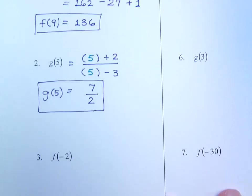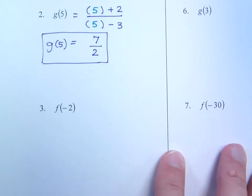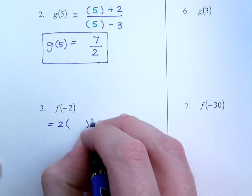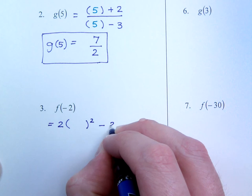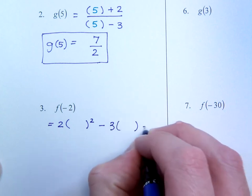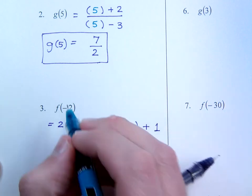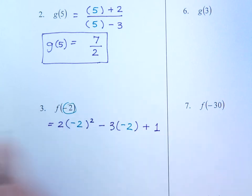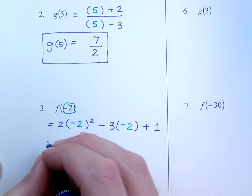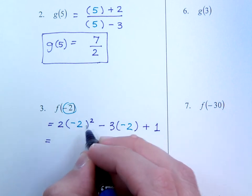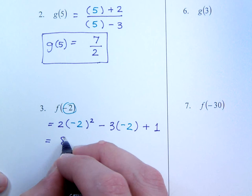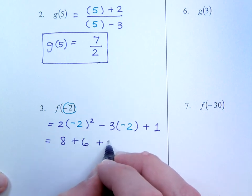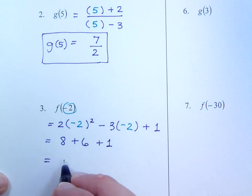I'm just going to keep working through the rest of these. We have f of negative 2, so again we're just going to plug that in. So 2 parenthesis squared minus 3 parenthesis plus 1. My input value is negative 2, so I replace what would have been x's with negative 2. So negative 2 squared is 4 times 2 is 8. Negative times negative is going to make that a positive 6. And then plus 1, so that equals 15.